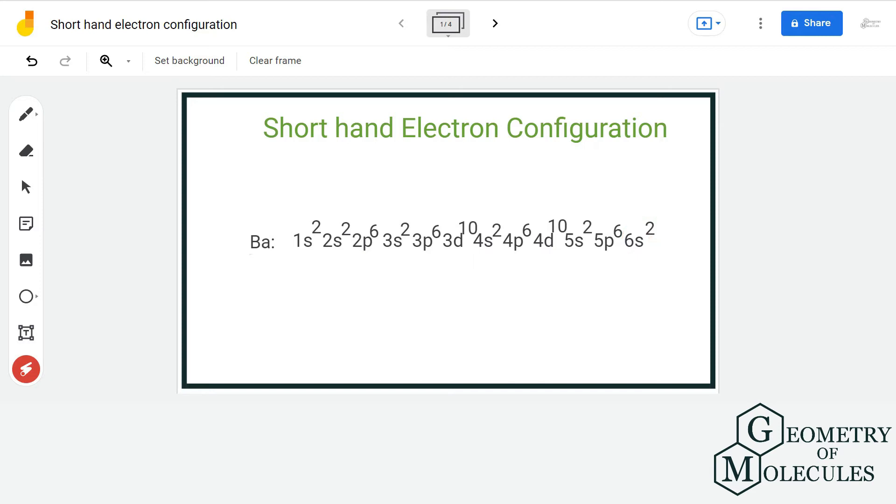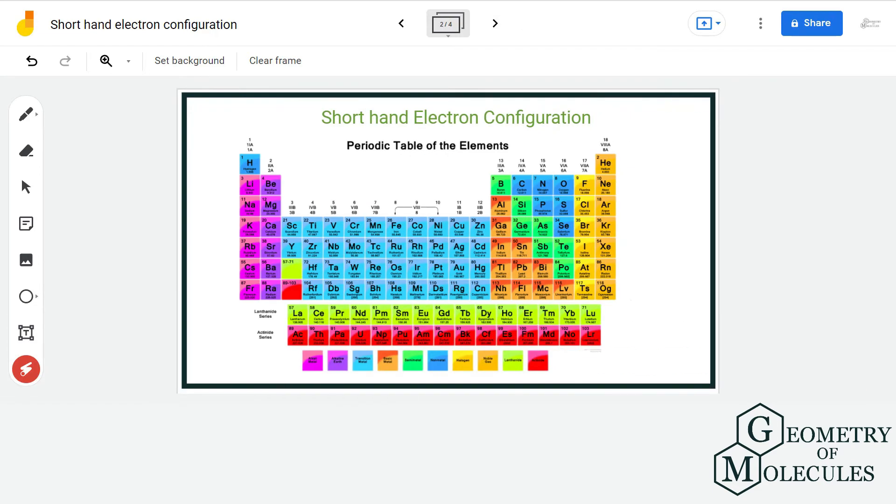So, rather than writing the whole electronic configuration down, we use shorthand notation method. To do that, let us look at the position of barium in the periodic table.